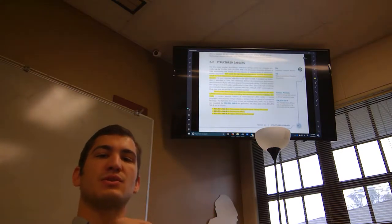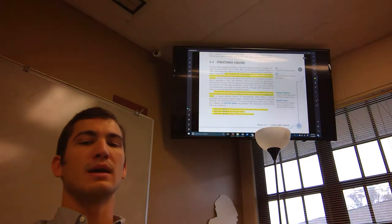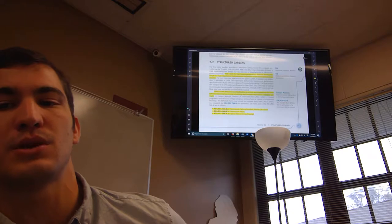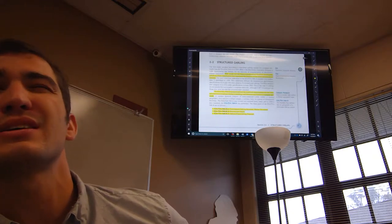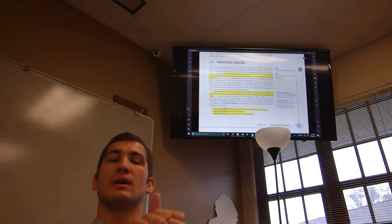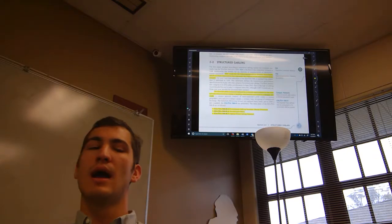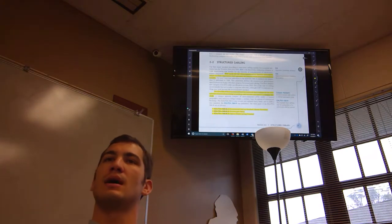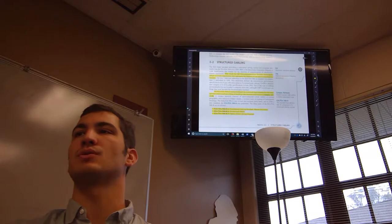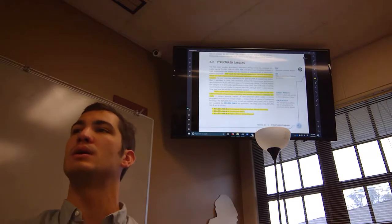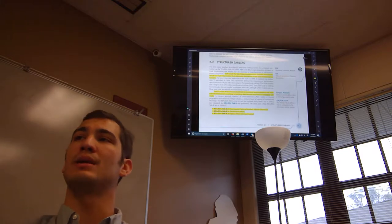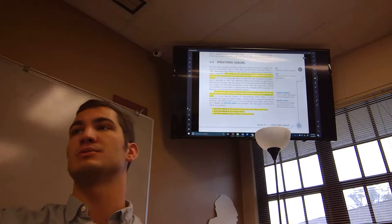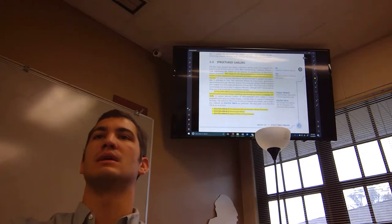So structured cabling, the TIA, so you have different sorts of standards. The EIA is the Electronic Industries Alliance, and the TIA is the Telecommunications Industry Association. You don't necessarily need to know what that stands for, but you do need to know that the EIA/TIA has certain standards. The important ones are the twisted pair of media. We went over standards for wireless transmission. If you want to be categorized as 802.11a, you have to hit these certain benchmarks. If you want to be 802.11g, you have to hit these benchmarks.